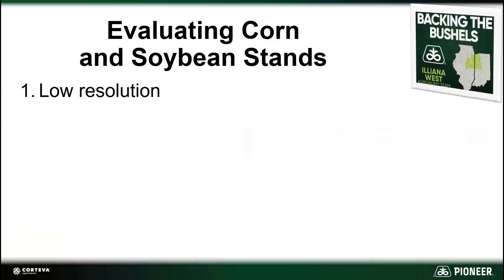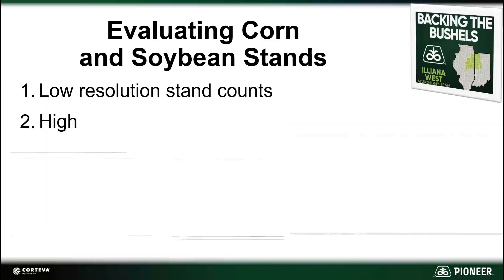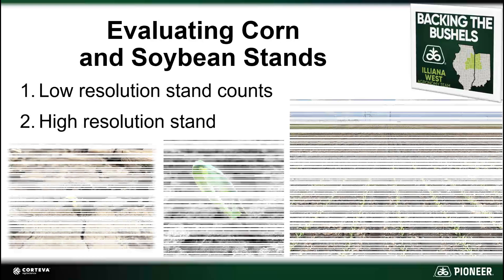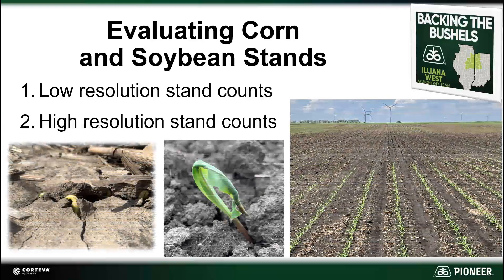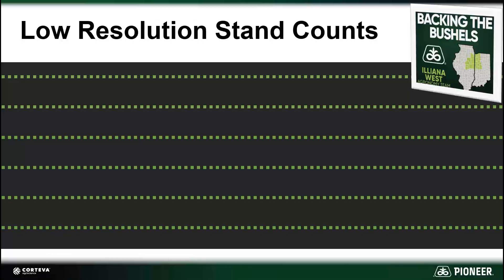Once the crop emerges, there are two methods I use to evaluate stands. The first I refer to as low-resolution stand counts and the second high-resolution stand counts. Let's first take a look at low-resolution stand counts — this is probably a refresher for most of you. The most common, traditional way is to simply count the number of plants in a specified area.